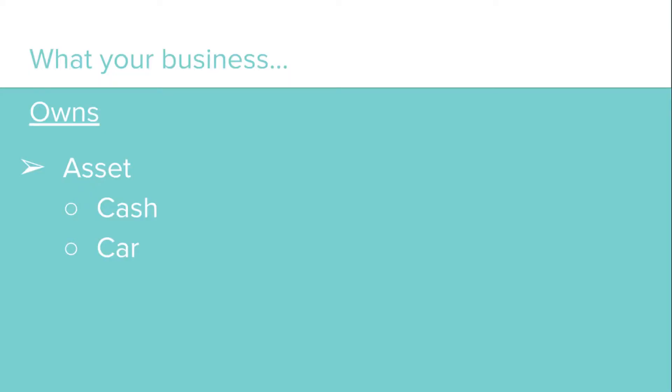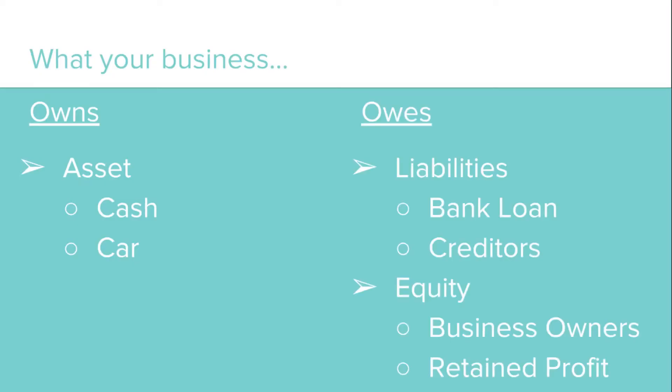Assets such as cash and a car are what your business owns. Liabilities are what your business owes to third parties — examples include your creditors and your bank loan. Equity arises from the capital introduced by the owners of the business and from retained profit. In other words, equity is what the business owes to its owners.